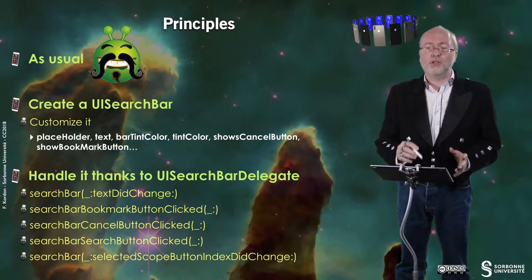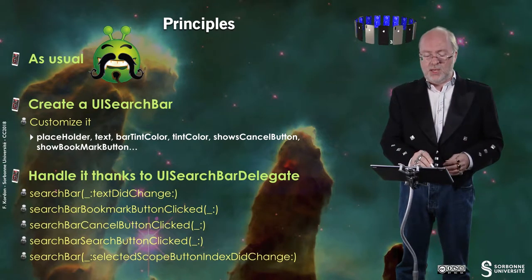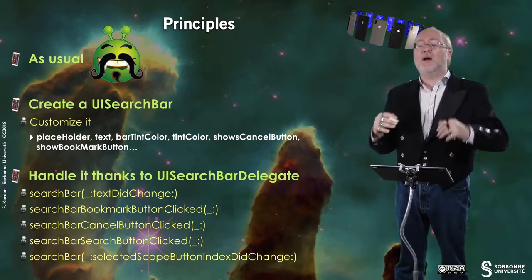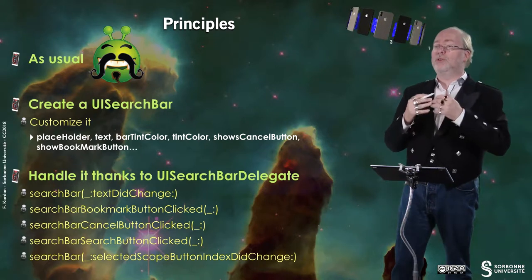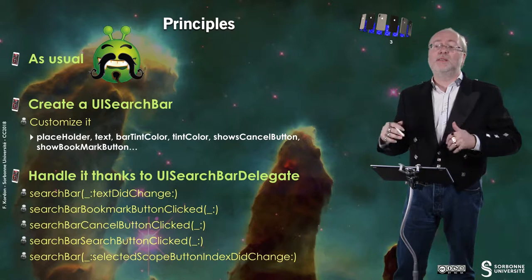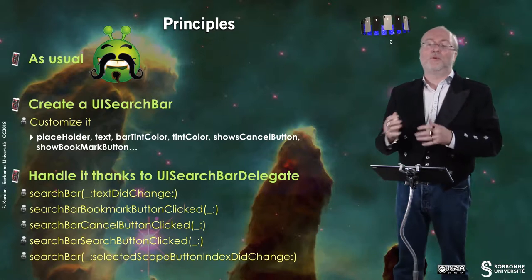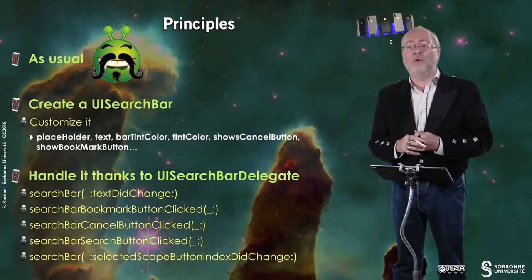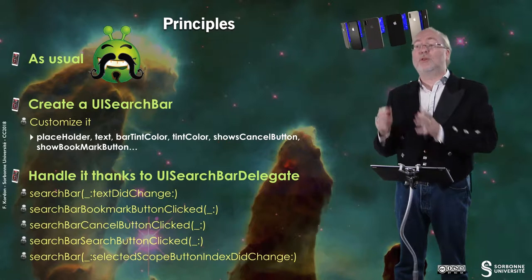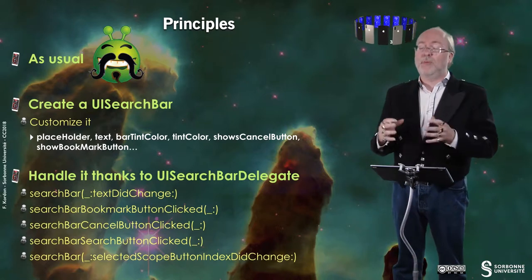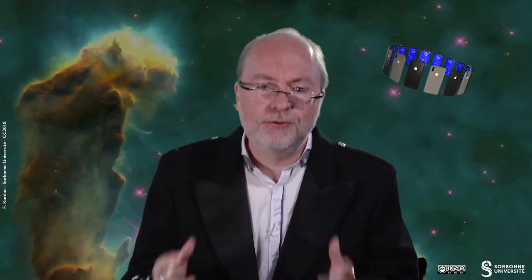You create a UISearchBar. You customize it. So here, this is the placeholder. It's a text that holds in the text area when there is nothing written. For example, you can set up instructions there. Text is the current text that has been typed by the user. Bar tint color, color tint, similar to the one of UI toolbars. Shows cancel button to have the cancel button appearing. Shows bookmark buttons to have the bookmark button appear. So you can go through it and just to check what you want to have in your UISearchBar and it's okay.